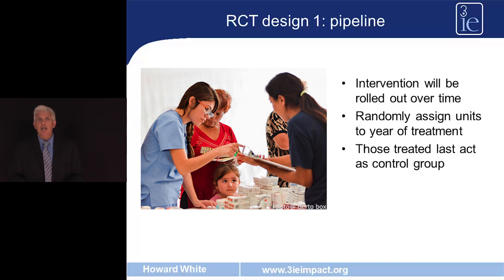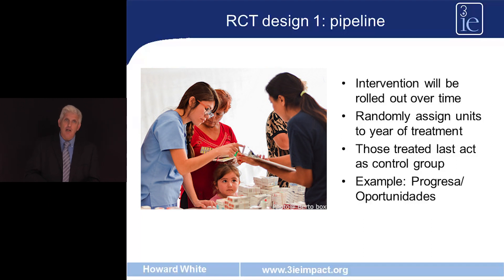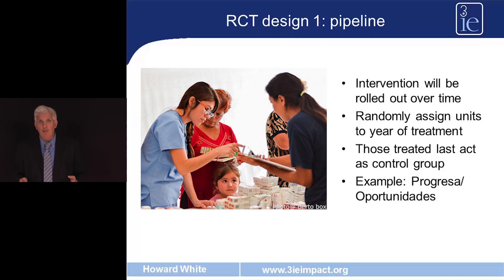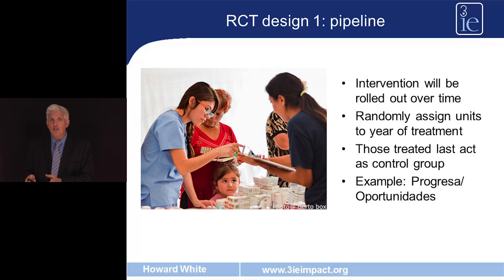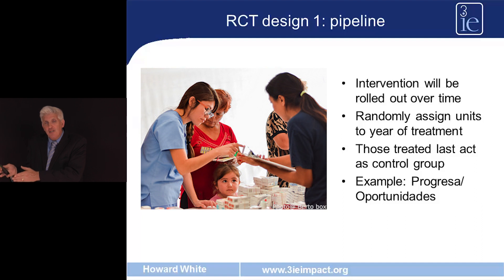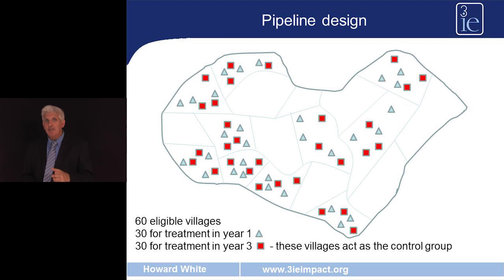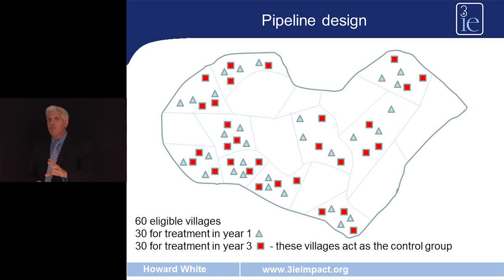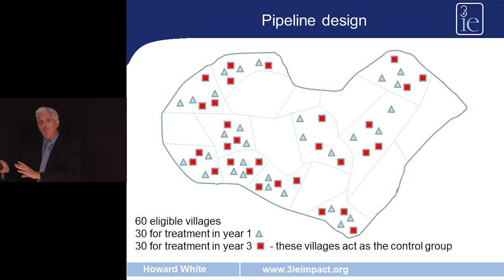An example is the Progresa Oportunidades Conditional Cash Transfer Programme in Mexico, which started in the mid-1990s with just over 600 rural communities randomly allocated into three groups: the first to receive it in year one, the second in year two, and the third in year three. The impact evaluation used those getting the programme in year three as the control group for the first two years. Here's a pictorial representation: 60 eligible villages, with 30 randomly chosen to get treatment in year one (blue triangles), and the remaining 30 (red squares) getting the programme in year three, acting as a control group for the first two years.